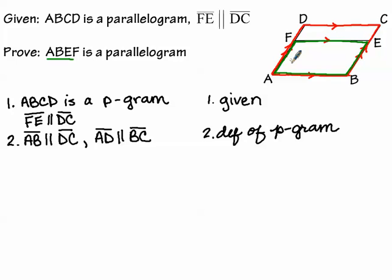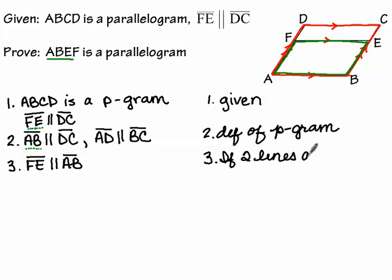The question becomes: how can I show that the top segment FE and the bottom segment AB in that green quadrilateral are parallel? I want to show those two are parallel. Looking at step one and step two, I can see that both of those segments are parallel to segment DC, which means they must be parallel to each other.